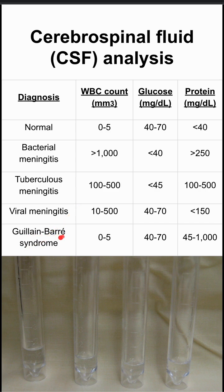Lastly, Guillain-Barré syndrome — you might remember this as an autoimmune disease where you have antibody production in the cerebrospinal fluid. Your white blood cell count is normal, your glucose count is normal, but your protein — which represents the antibodies being produced — is very, very high.